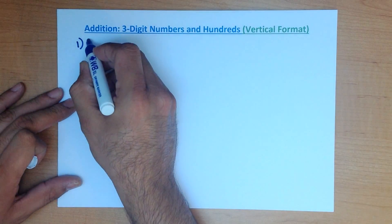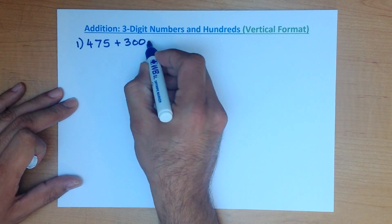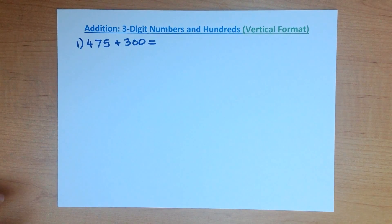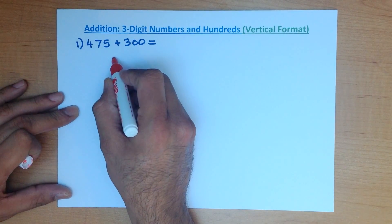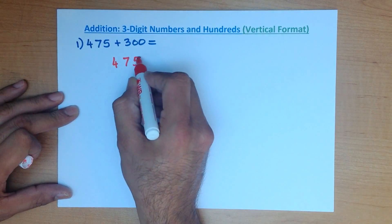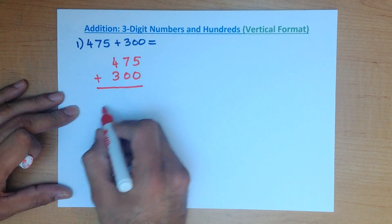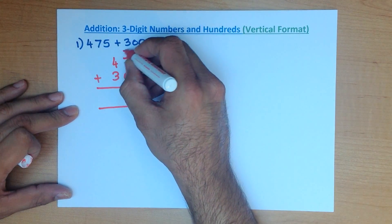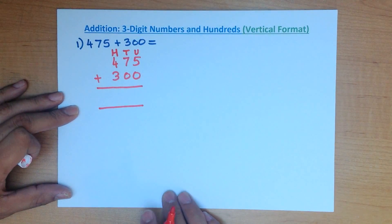What is 475 plus 300? In the vertical format, the first thing we do is write these numbers down in columns. 475 plus 300. We can label the columns: the first one is units, the next one is tens, and the third one is hundreds.